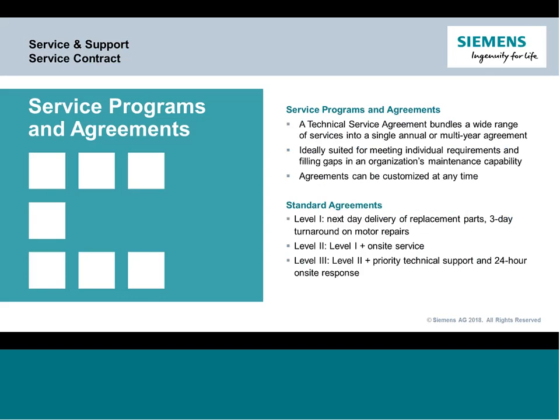We also have a service contract program, sold and supported through the End-User Sales group. There are different scenarios and strategies available, supporting both labor and parts with different turnaround times and priority levels. If machine downtime would be extremely critical to your operation, you might want a higher-priority contract. If it's a secondary machine, a lower tier may suffice. Reach out to the End-User Sales team through the 1-800 number for details and pricing on service contracts once you're outside your standard warranty.